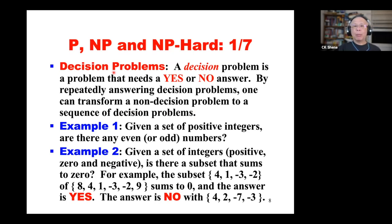A decision problem is a problem that only needs a yes or no answer. For example, given two numbers A and B, is A greater than B? This is a decision problem. Given an array of elements, asking if the i-th element is the third largest is also a decision problem. But sorting is not a decision problem because sorting asks for a sorted result — though we could ask a sequence of decision problems to solve a non-decision problem.